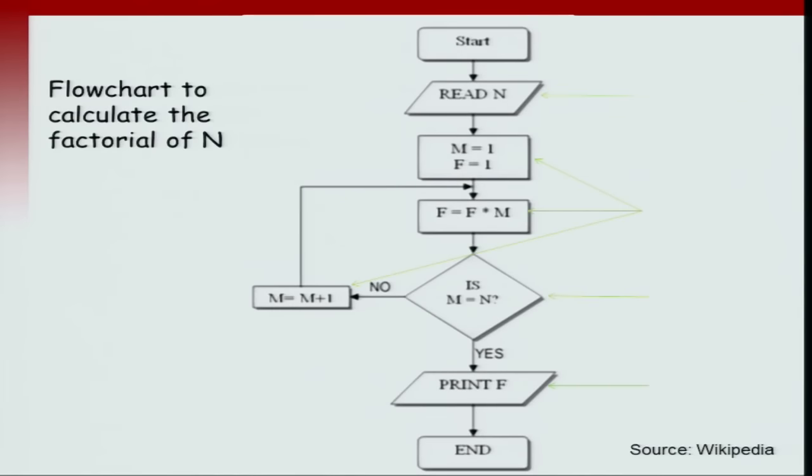If you wanted to compute a slightly different problem, which is let's say the factorial of n, which is just the product of the first n numbers, the flow chart will look fairly similar. The only difference is that instead of adding numbers you will multiply them. This flow chart is similar to the previous flow chart. You will first input an n and then increment n until you hit n equal to m. If so, you will finally print the factorial. Otherwise, you go back to the loop.